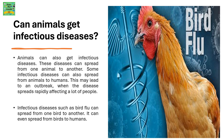Can animals get infectious diseases? Animals can also get infectious diseases. These diseases can spread from one animal to another. Some infectious diseases can also spread from animals to humans. This may lead to an outbreak when the disease spreads rapidly, affecting a lot of people. Infectious diseases such as bird flu can spread from one bird to another, and even from birds to humans.